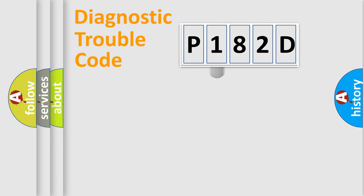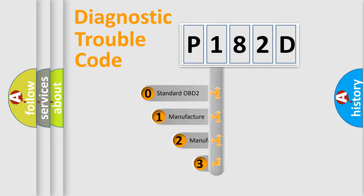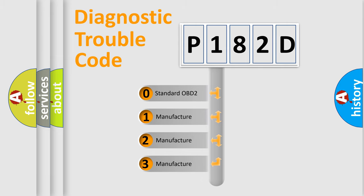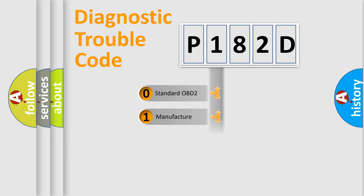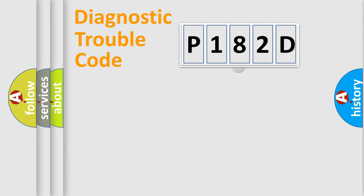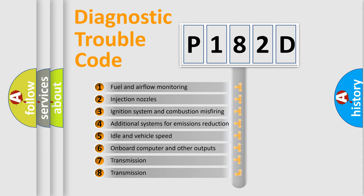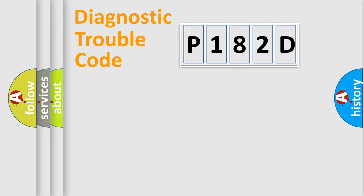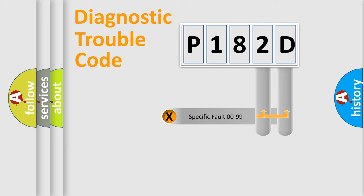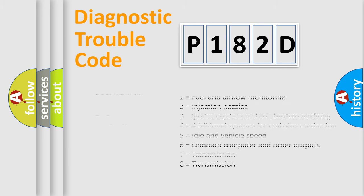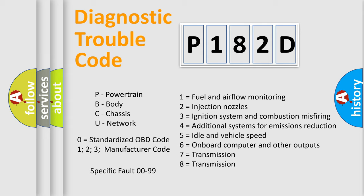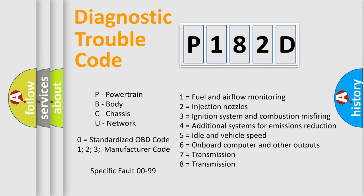This distribution is defined in the first character of the code. If the second character is expressed as zero, it is a standardized error. In the case of numbers 1, 2, or 3, it is a manufacturer-specific error. The third character specifies a subset of errors. This distribution is valid only for the standardized DTC code, and only the last two characters define the specific fault of the group.